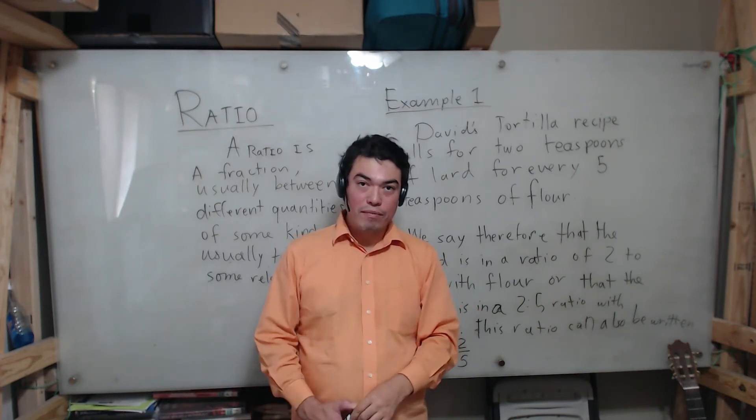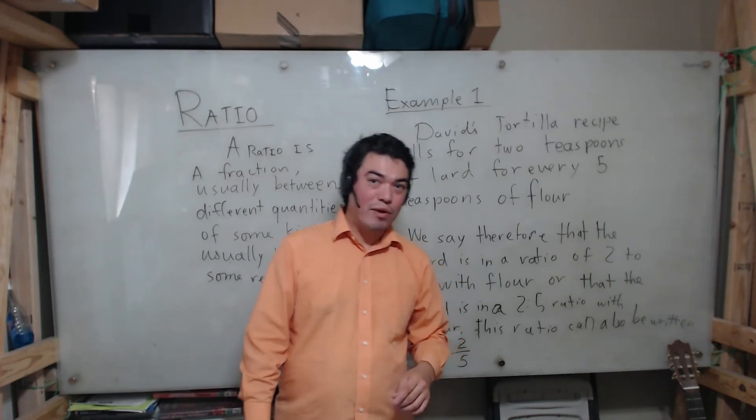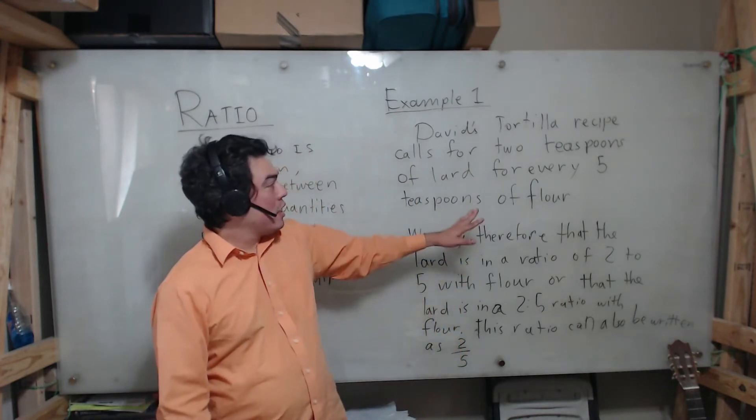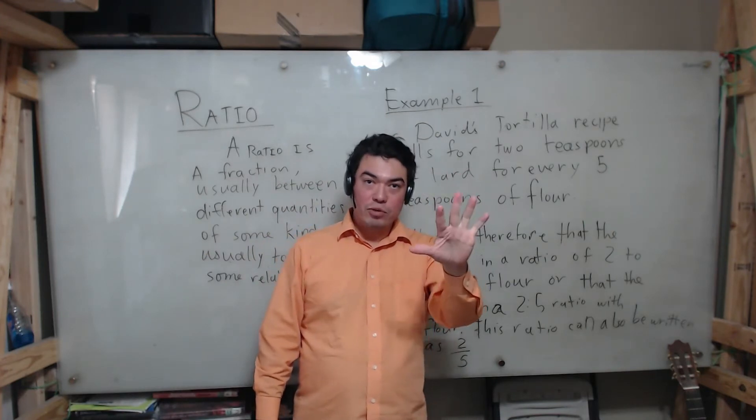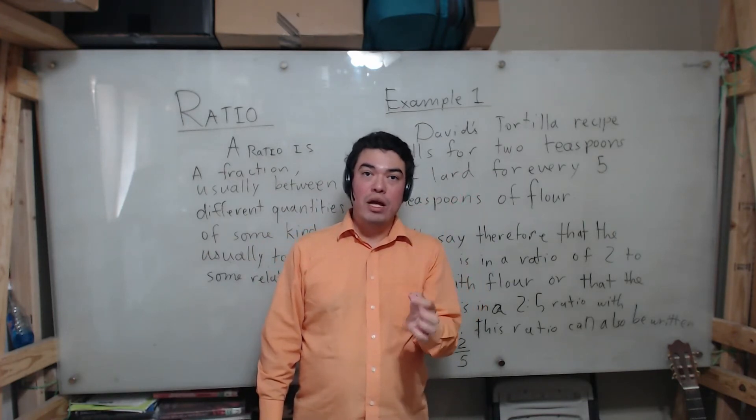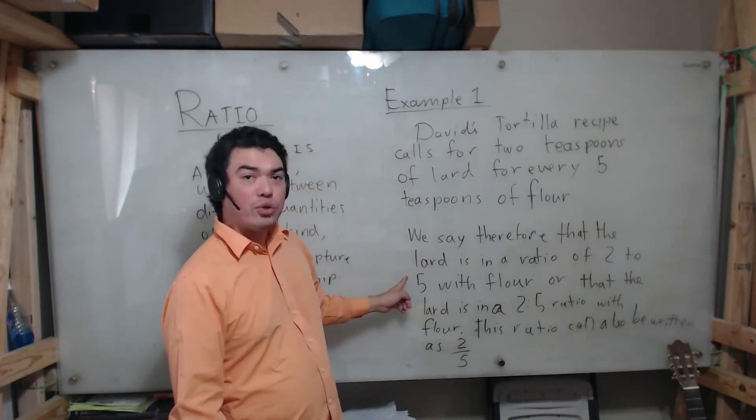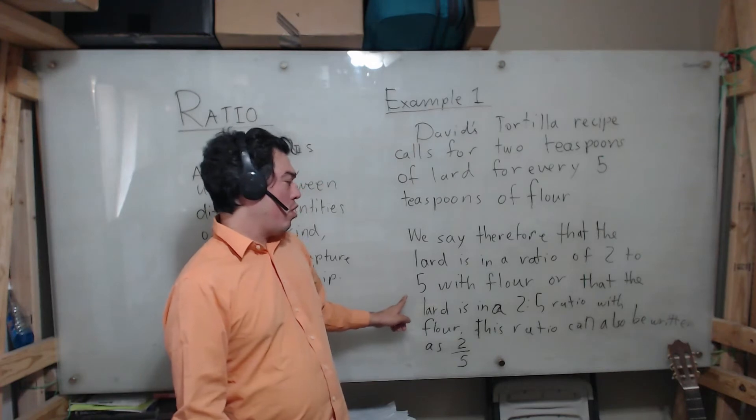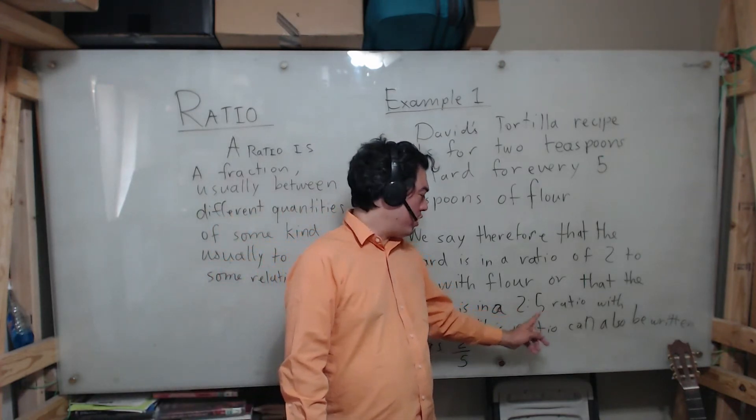That relationship is a ratio, so we say therefore that the lard is in a ratio of two to five with flour, or that the lard is in a two to five ratio with the flour. Notice how here I'm using a colon to indicate that ratio. So I can say verbally two to five, I can say it two colon five which is right two to five, or I can write it down as the fraction two over five.